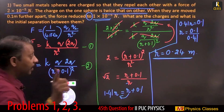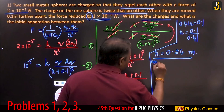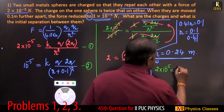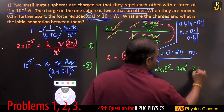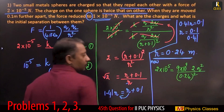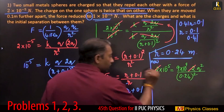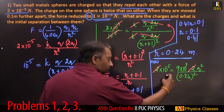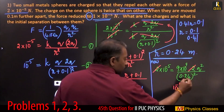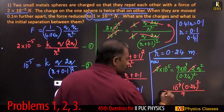Now we have to find the charges using this value of r. Take equation 1: 2×10⁻⁵ = (9×10⁹) × (q × 2q) / (0.24)². The 2s cancel; 10⁹ goes to denominator making 10⁻⁵ × 10⁻⁹ = 10⁻¹⁴. This gives: 0.24² / 9 = q², so q² = (0.24² × 10⁻¹⁴) / 9.